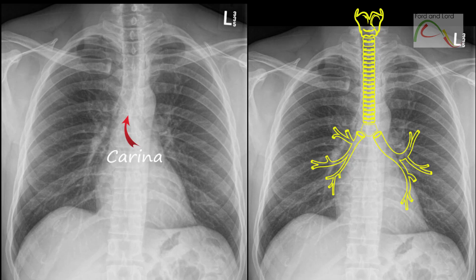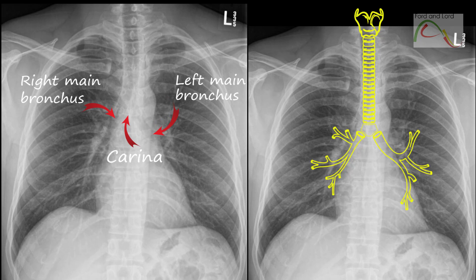At the level of the 4th to 5th thoracic vertebra, the trachea divides into the right and left main bronchi. The inferior ridge of the last cartilage between the division of the two main bronchi is known as the carina. The subcarinal angle, or the angle of the carina, is the angle between the right and left main stem bronchi measured along their inferior borders, which varies between 60 to 80 degrees and has clinical significance.